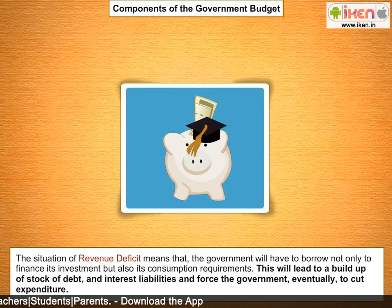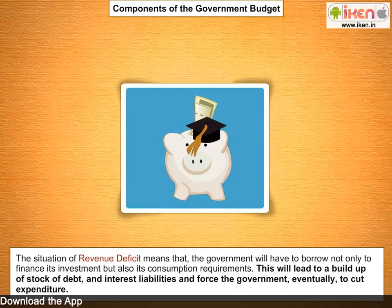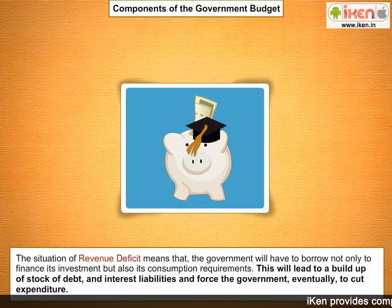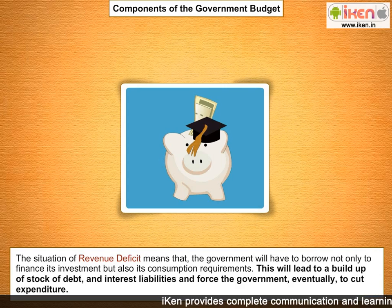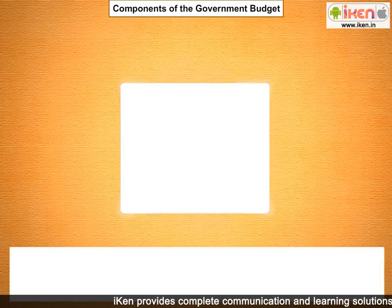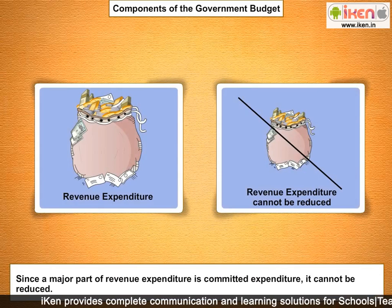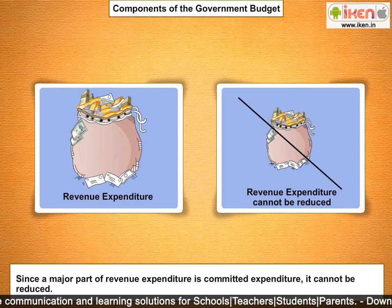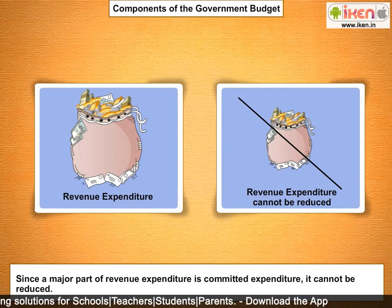A revenue deficit means the government will have to borrow not only to finance its investment but also its consumption requirements. This leads to a buildup of debt and interest liabilities, eventually forcing the government to cut expenditure. Since a major part of revenue expenditure is committed expenditure that cannot be reduced, the government often reduces productive capital expenditure or welfare expenditure, resulting in lower growth and adverse welfare implications.